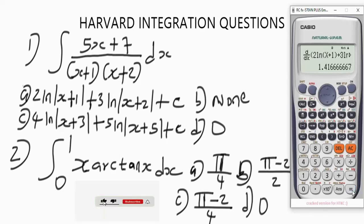Let's press equals and see if we get 1.41 as the answer for option A. We get 1.41 — correct! The answer to this question is option A. It's as simple as that with the calculator.